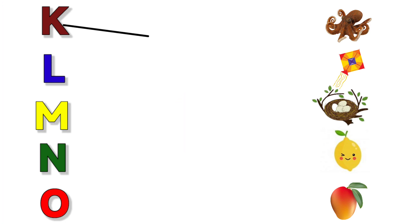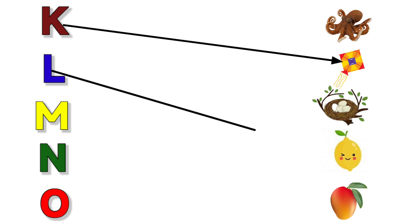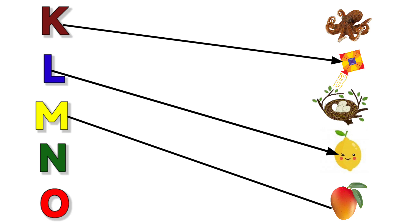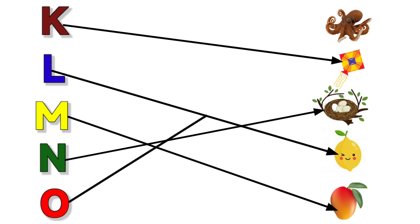K for Kite. L for Lemon. M for Mango. N for Nest. O for Octopus.